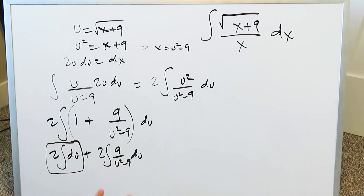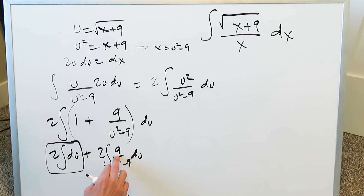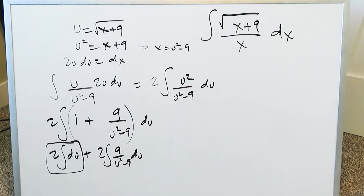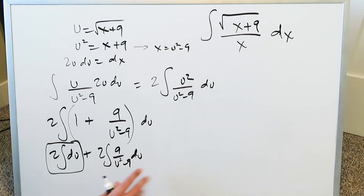The first part — 2 integral du — is easy and can be left till the very end. Now we need to integrate 2 integral of 9 over u squared minus 9 du. This can be integrated by a variety of means: you can do partial fraction decomposition or trigonometric substitution. For this particular video I would like to choose trigonometric substitution as a means of review and to generate some interest. Otherwise you can easily do partial fraction decomposition, and that perhaps would be the quicker way.